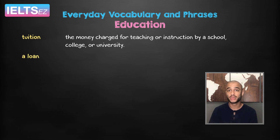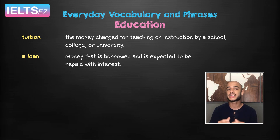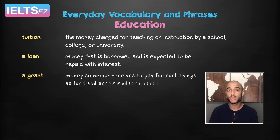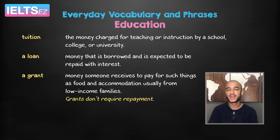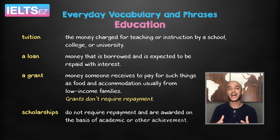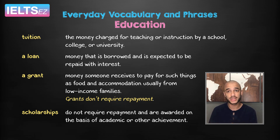A loan means money that is borrowed and is expected to be repaid with interest. A grant is money someone receives to pay for such things as food and accommodation, usually from low-income families. Grants don't require repayment. Just like grants, scholarships do not require repayment and are awarded on the basis of academic or other achievements.